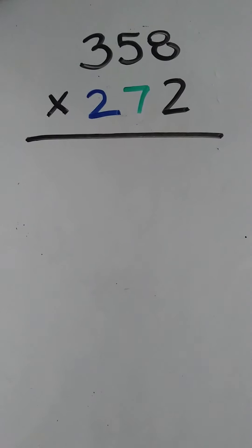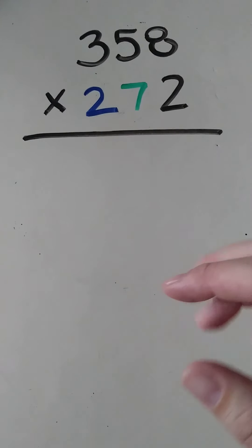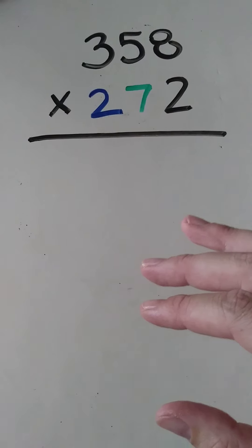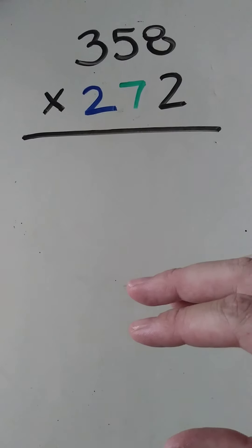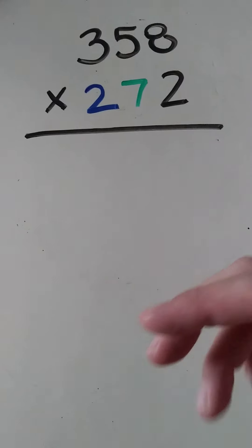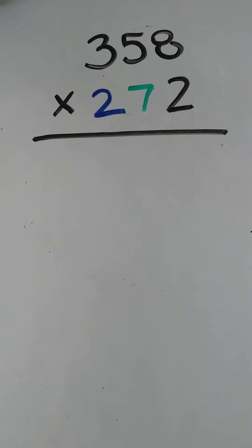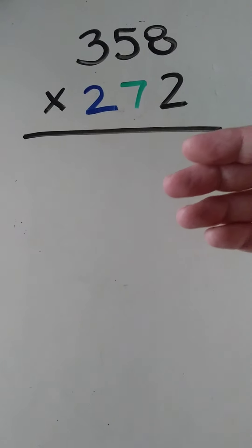This video is multiplying three digits by three digits. Now if you watch the other videos about multiplying three digits by two digits or two digits by another two digits, it's basically the same thing, although this one of course has more numbers so it's going to have an extra step.